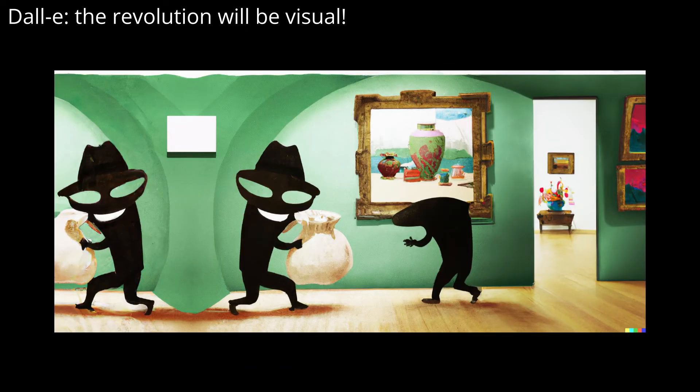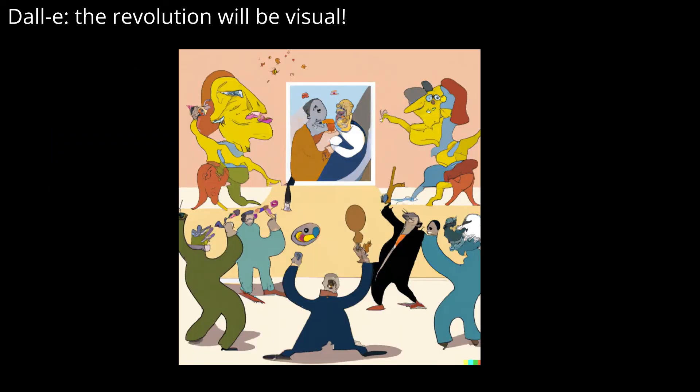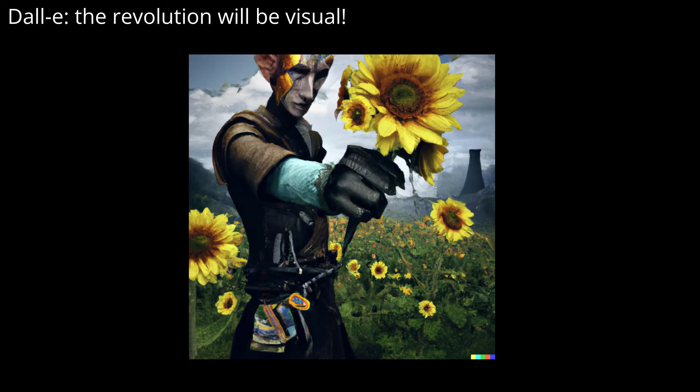Not only that, there are questions about infringing copyright, as DALI's AI algorithms are trained on millions of images that already exist on the internet. It could be argued that it is copying images and styles of art created and owned by thousands of photographers and artists.